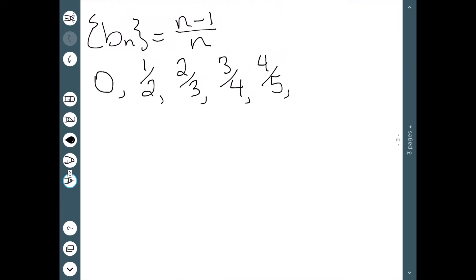So we have 0, 1 half, 2 thirds, 3 fourths, 4 fifths, 5 sixths, 6 sevenths, etc. You'll notice both the numerator and the denominator are going to increase by 1 each time. We're never going to be bigger than 1, but we are going to get really close. In this case, the limit as n goes to infinity of my sequence is 1.